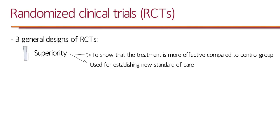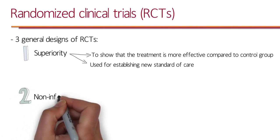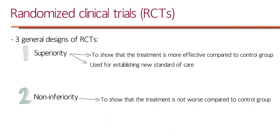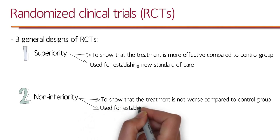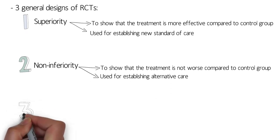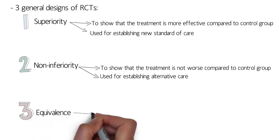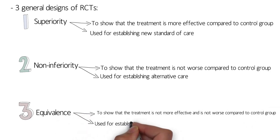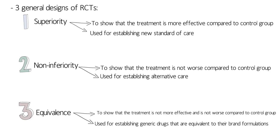In situations where we have a good standard of care, it might be unethical to give the intervention group a treatment that is not standard of care. The second design is non-inferiority trials. This design is to show that the treatment is not worse compared to the control group, and it is used for establishing alternative care — when we have a drug that's not necessarily superior to the standard of care but might be another alternative. The last design is equivalence, which is used to show the treatment is not more effective and is not worse compared to the control group. This design is used for establishing generic drugs that are equivalent to their brand formulation.